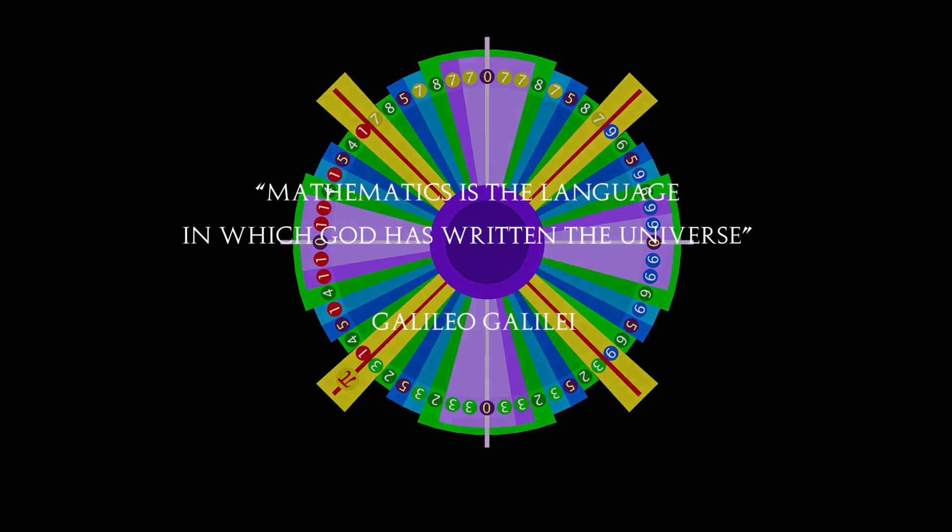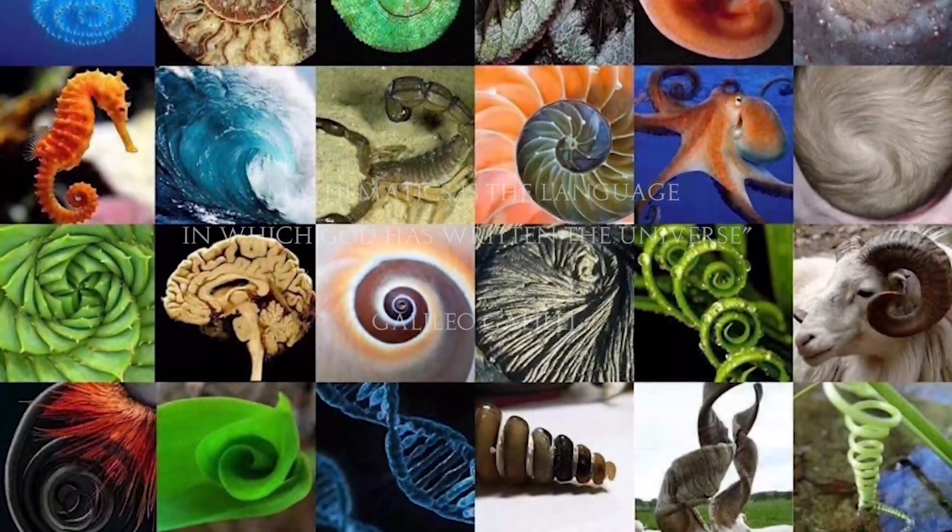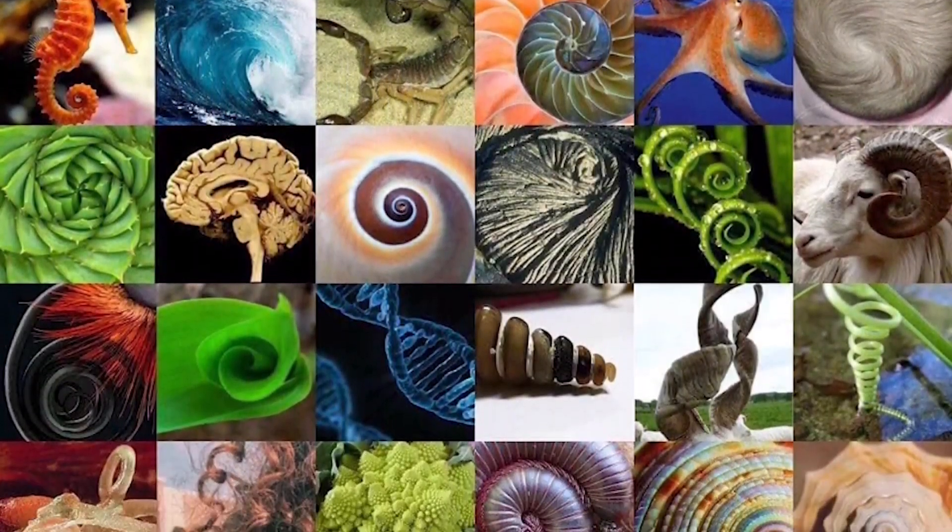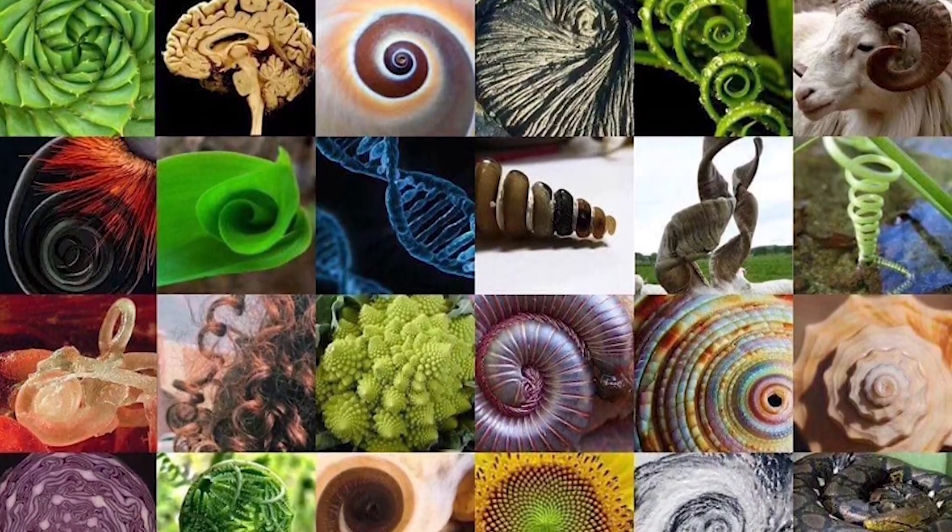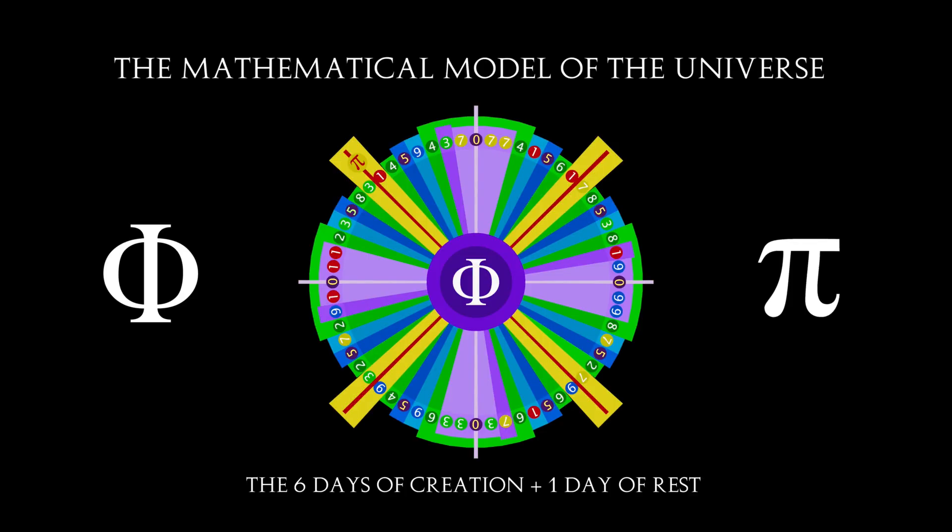Mathematics is the language in which God has written the universe. This is why we can find fractal patterns in absolutely everything. Phi and Pi appear to be mathematical proofs of intelligent design, and this mechanism demonstrates the 7 phases.